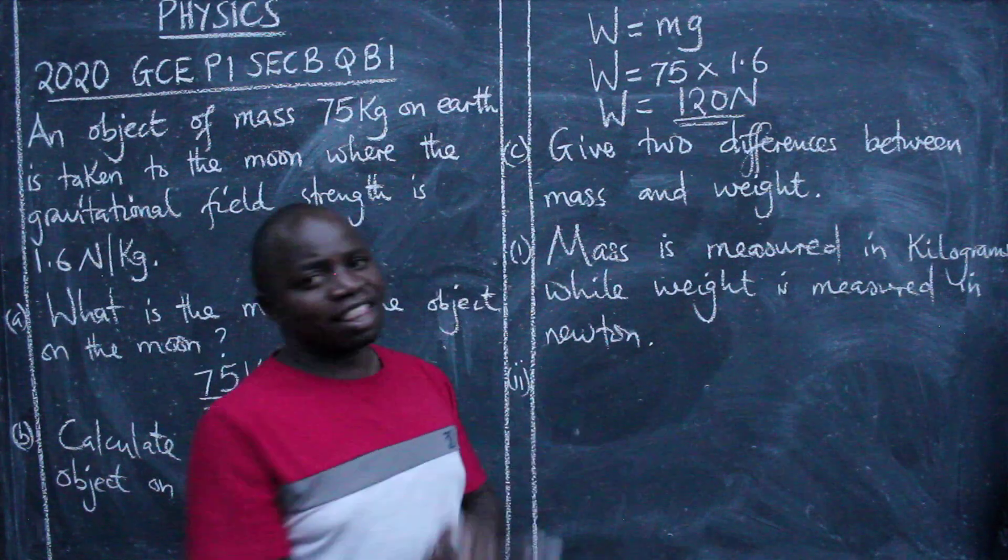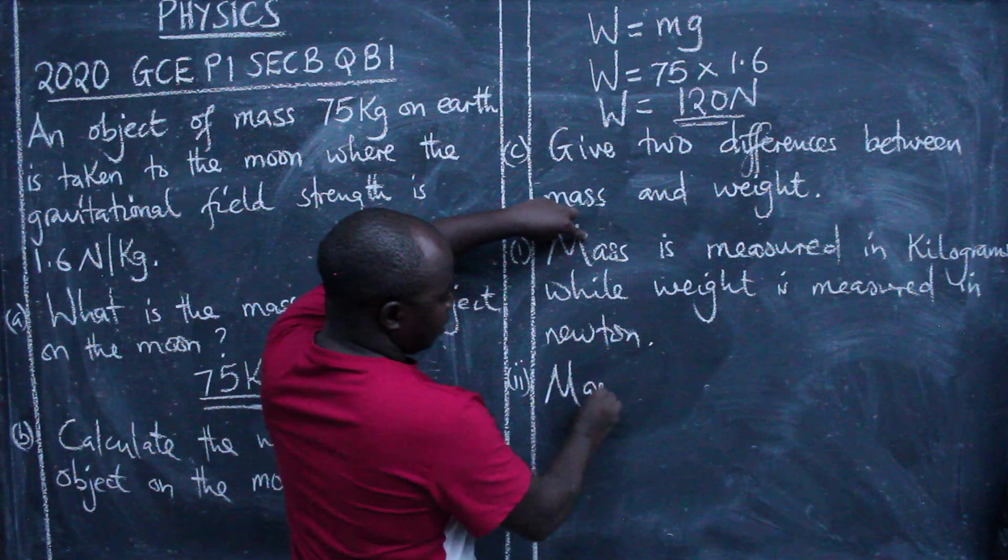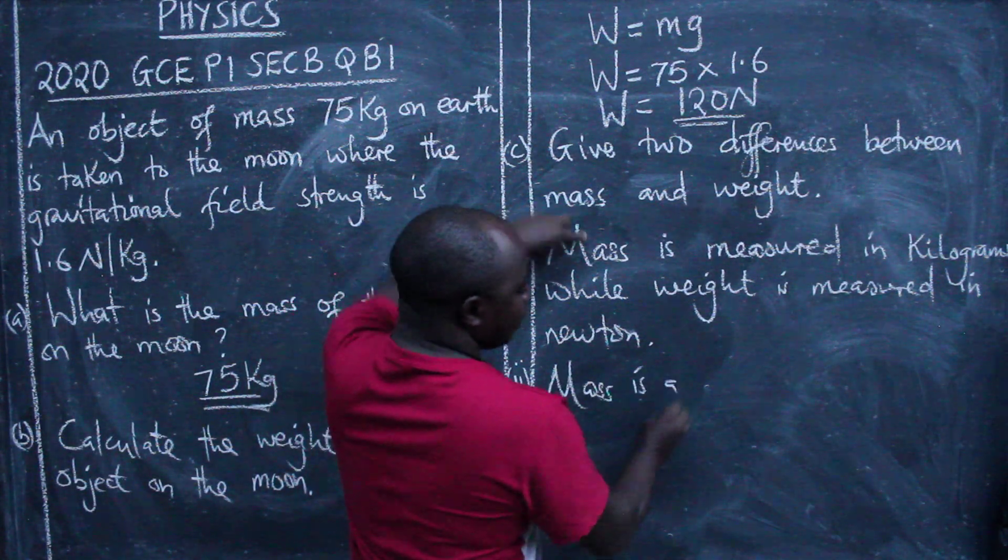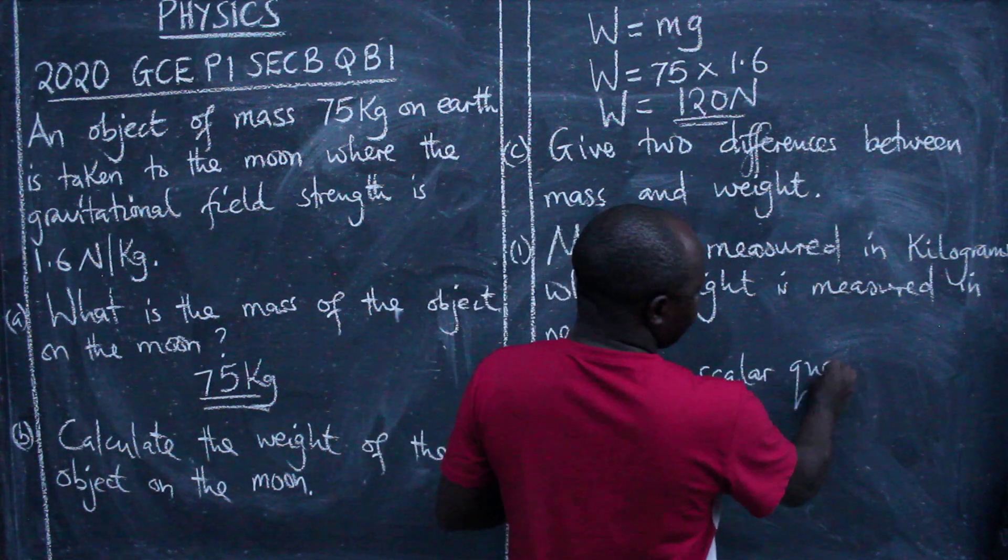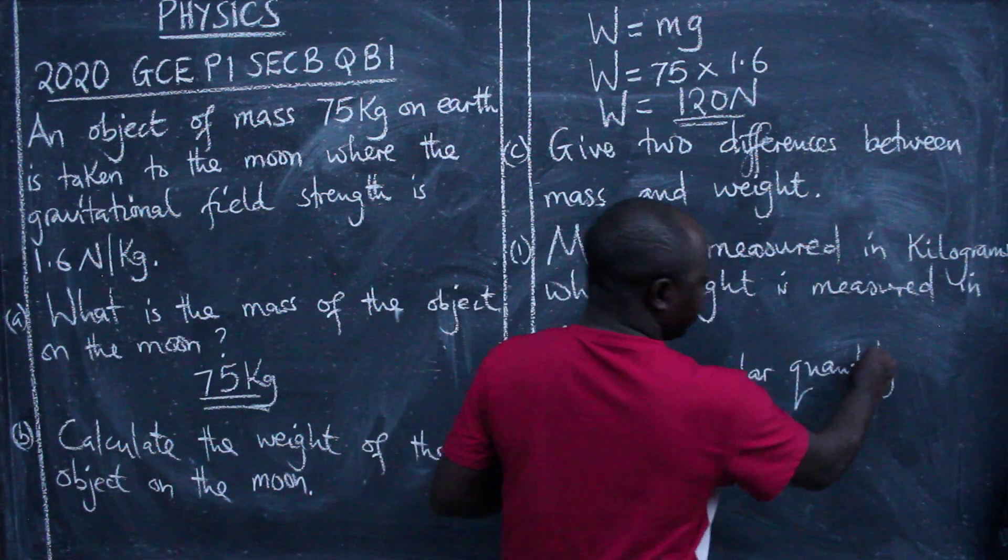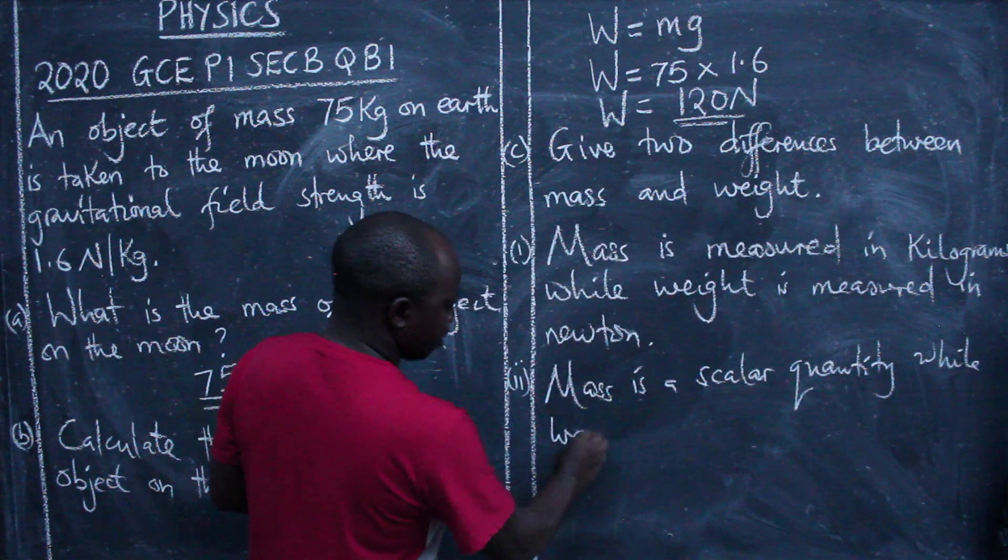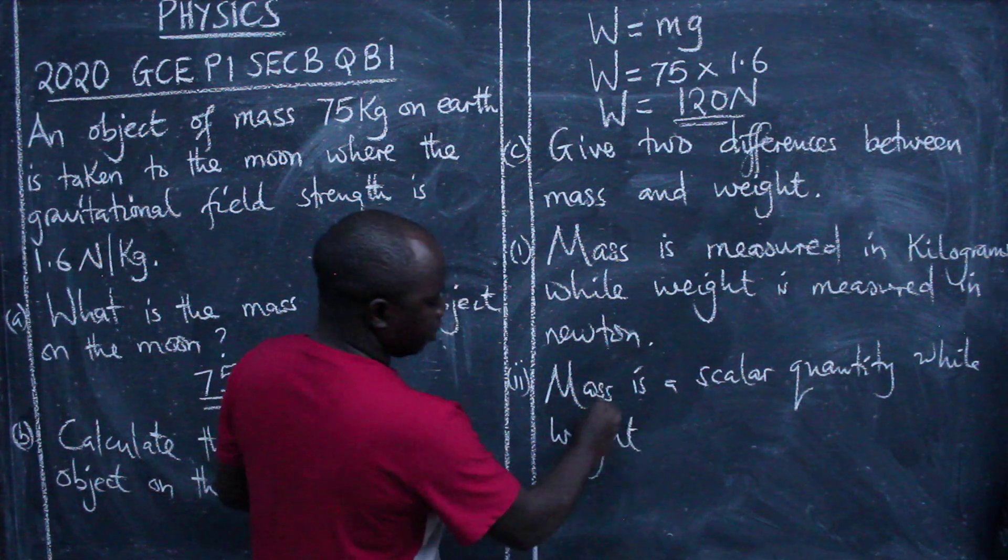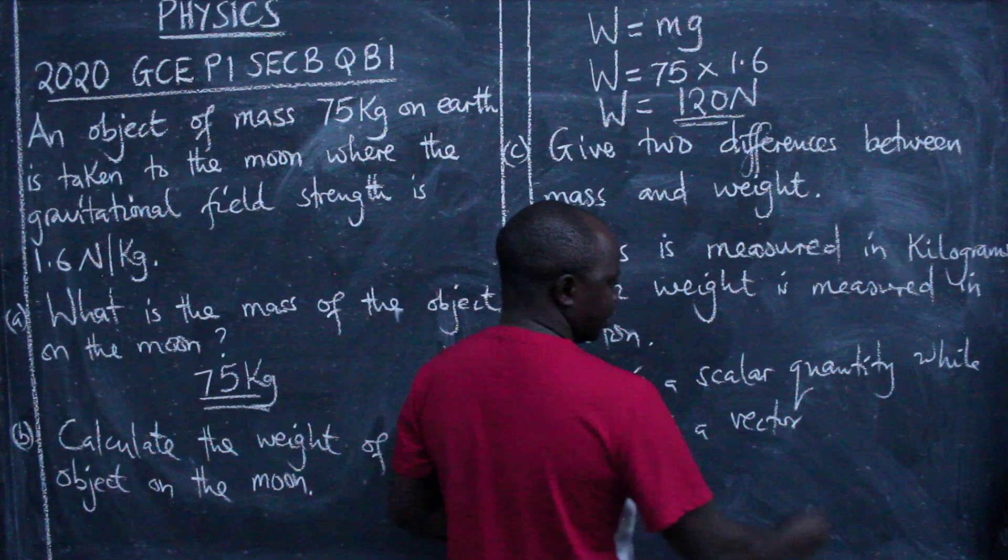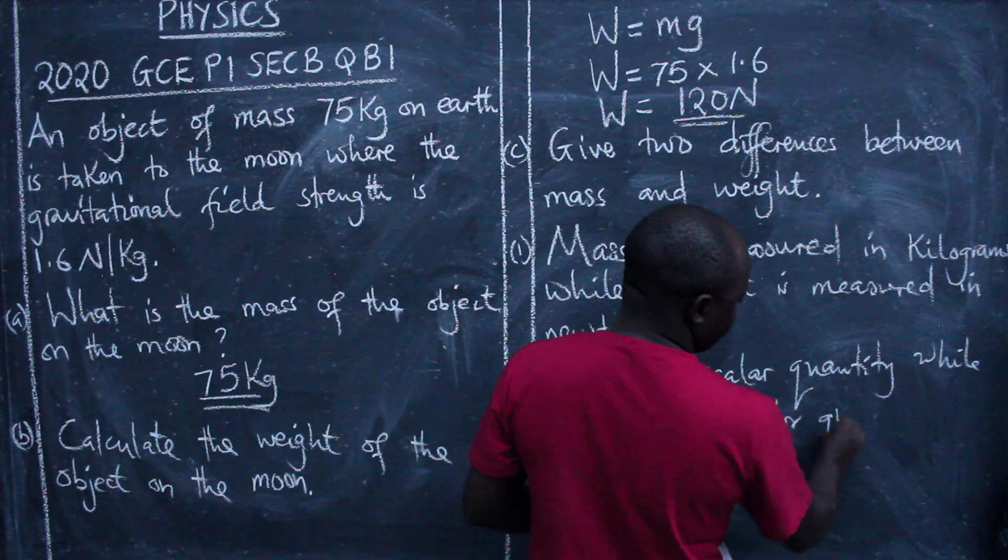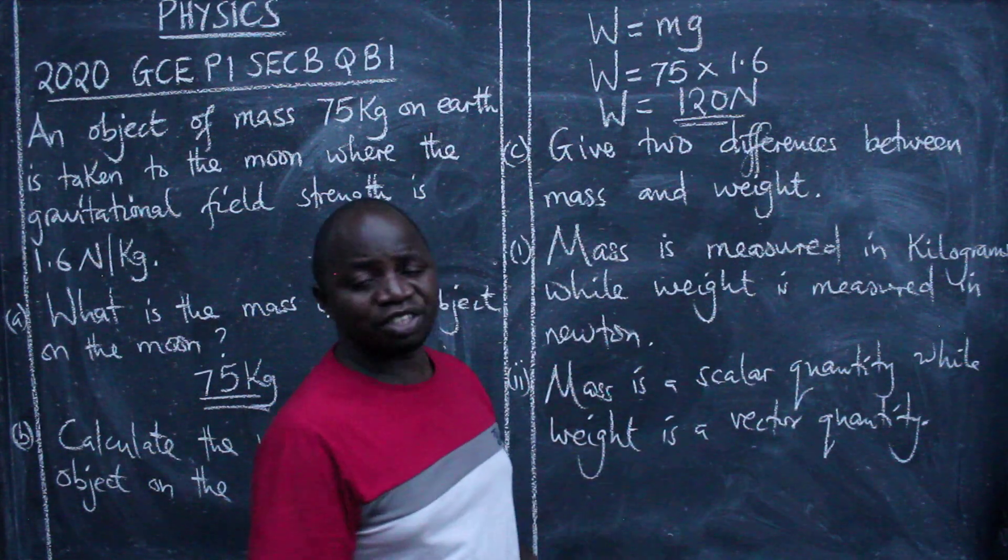The second one you can say mass is a scalar quantity while weight is a vector quantity. There are a lot of differences that are there that you can cite.